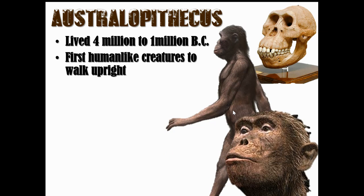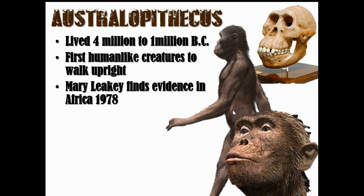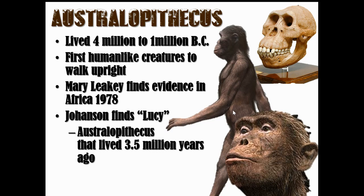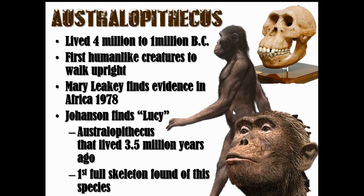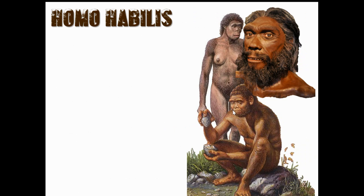The Australopithecus — which sounds like a dinosaur — lived from 4 million to 1 million BC. This was the first human-like creature to walk upright. Mary Leakey found evidence in Africa, and Johanson found Lucy. Lucy lived 3.5 million years ago and is the first full skeleton found of the species. When they finally found Lucy, it confirmed the theory — a full skeleton as proof.